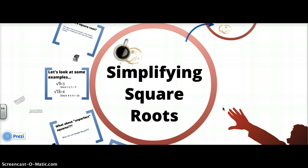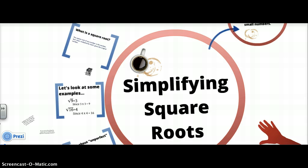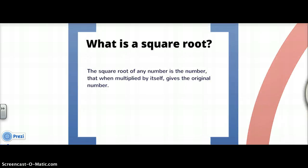Today we're going to talk about simplifying square roots, also known as simplifying radicals. First off, what exactly is a square root? A square root of any number is the number that when multiplied by itself gives the original number.